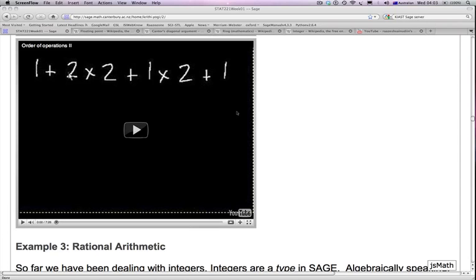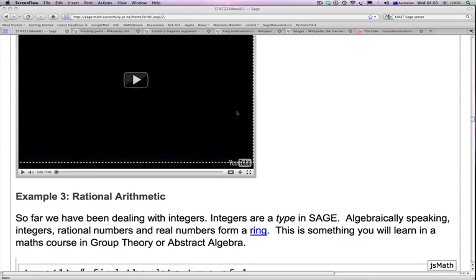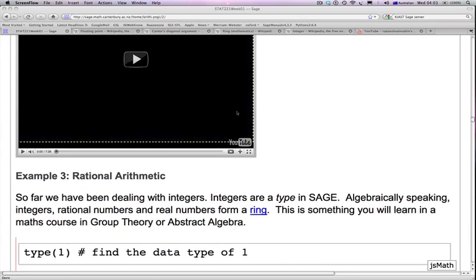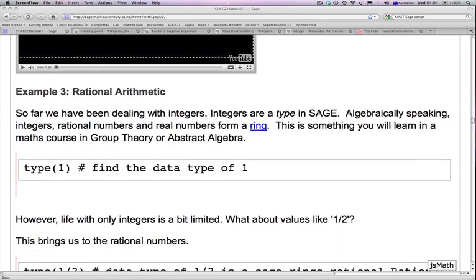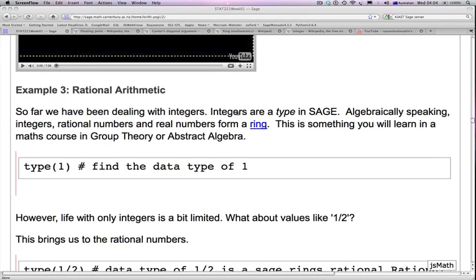Alright, this is lecture 1.3 of week 1's material from the Monte Carlo methods. This is about rational arithmetic, example 3.